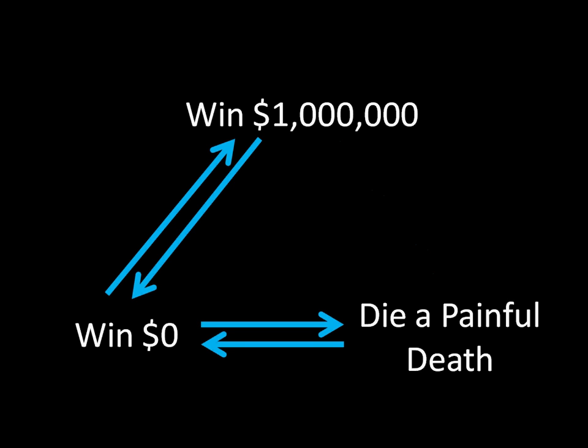This also works with even more indifference. Here the individual is indifferent between winning a million dollars and winning zero dollars, and indifferent between winning zero dollars and dying a painful death. This is like saying A equals B and B equals C, so A should equal C as well — meaning the individual must be indifferent between winning a million dollars and dying a painful death.